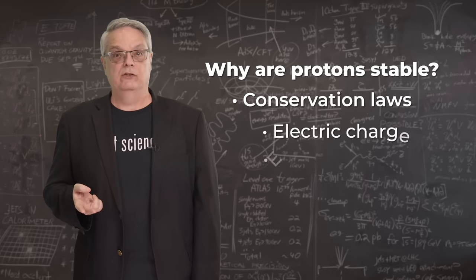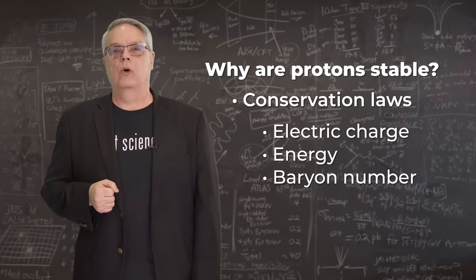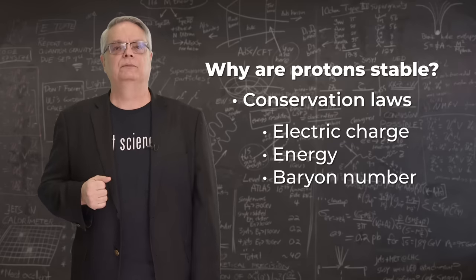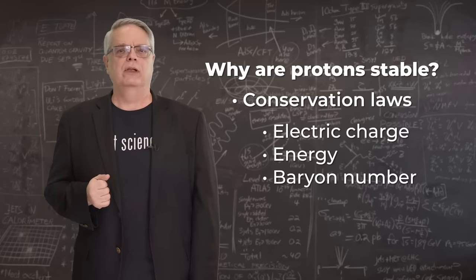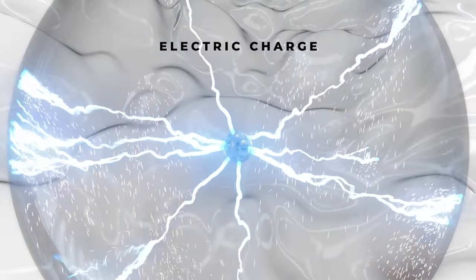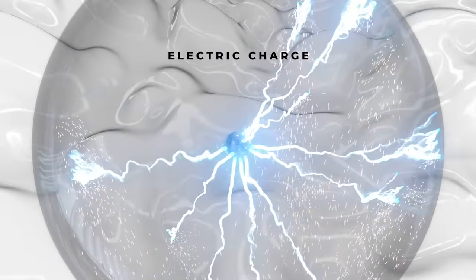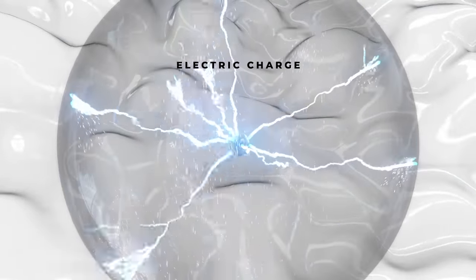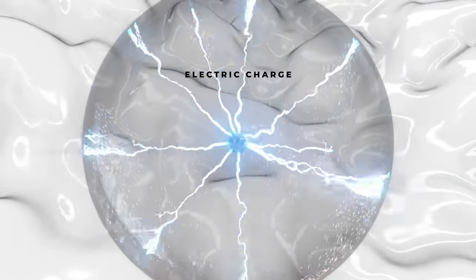Electric charge, energy, and a more obscure quantity called baryon number. Electric charge is pretty familiar. Conservation of charge simply means that after the decay, the amount of electric charge must be the same as it was before the decay.